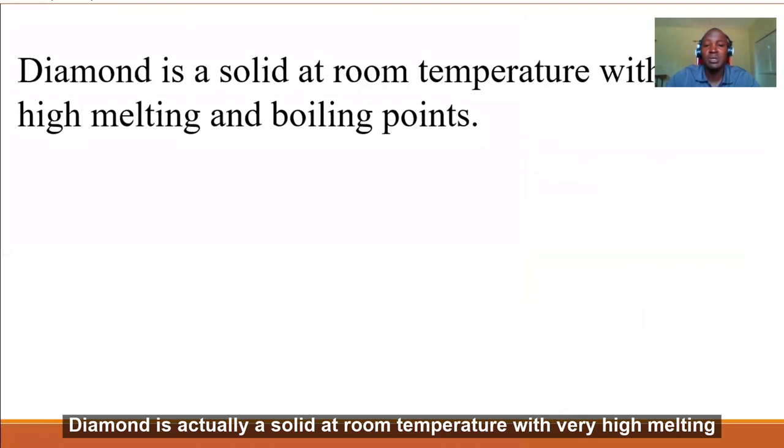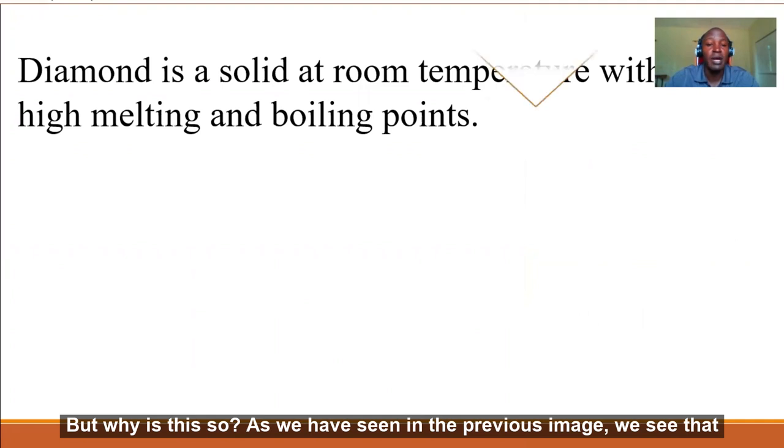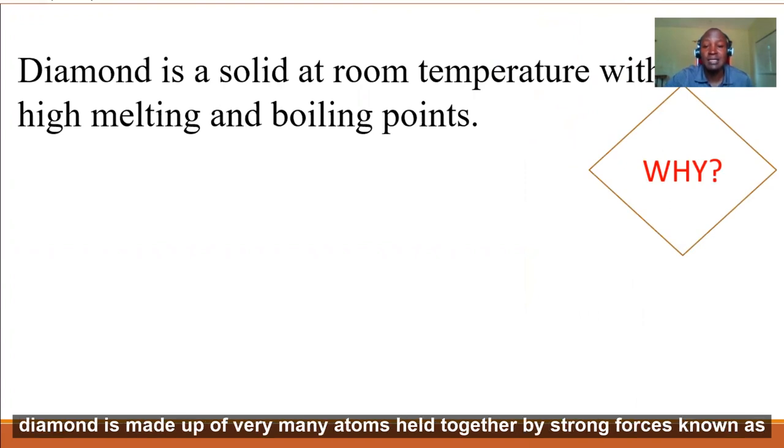Diamond is a solid at room temperature with high melting and boiling points. But why is this so? As we have seen in the previous image, we see that diamond is made up of very many atoms held together by strong forces known as strong covalent bonds.